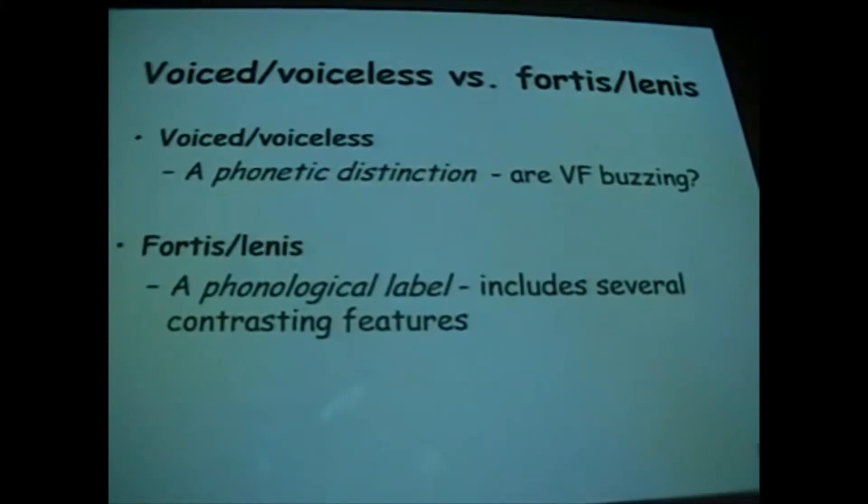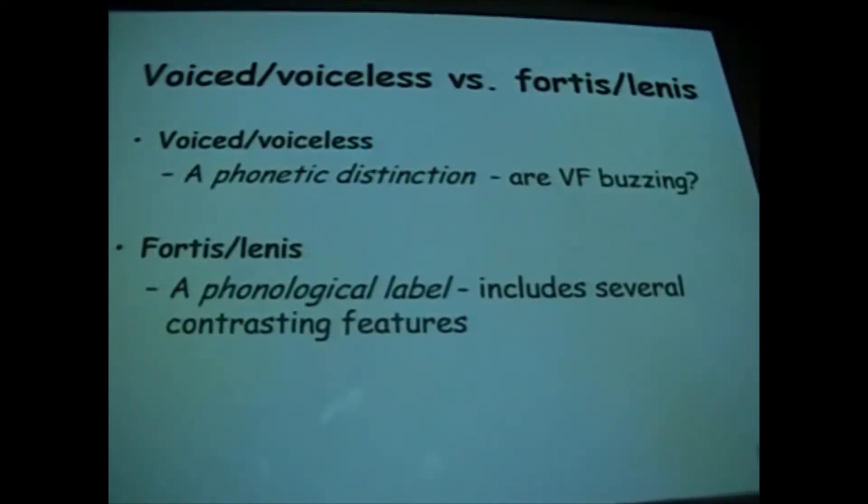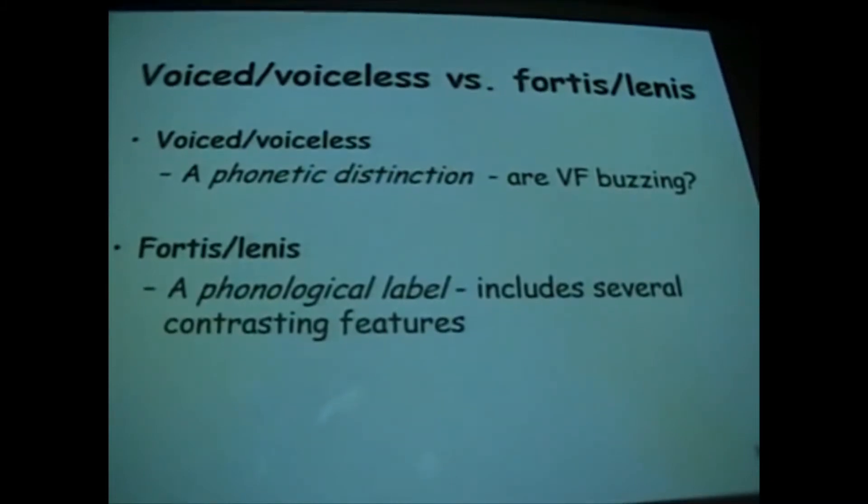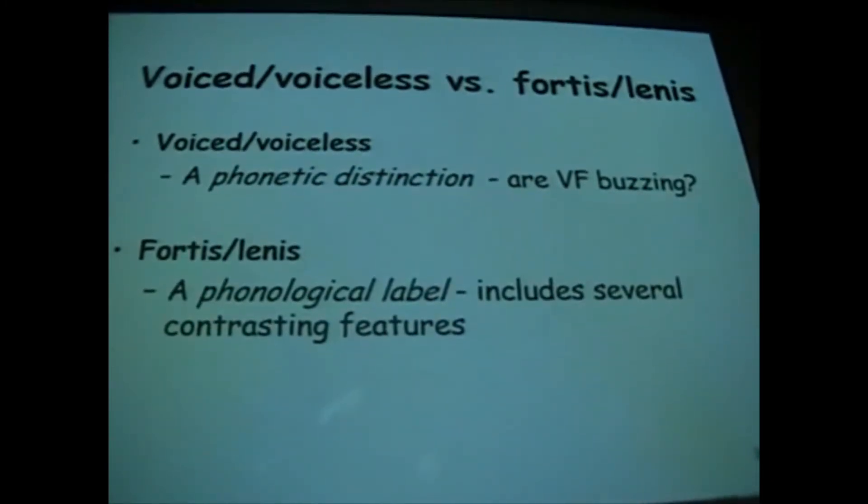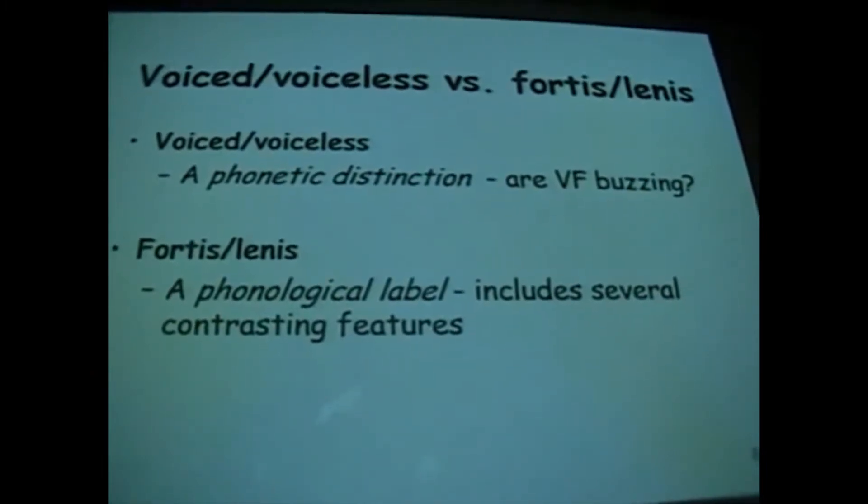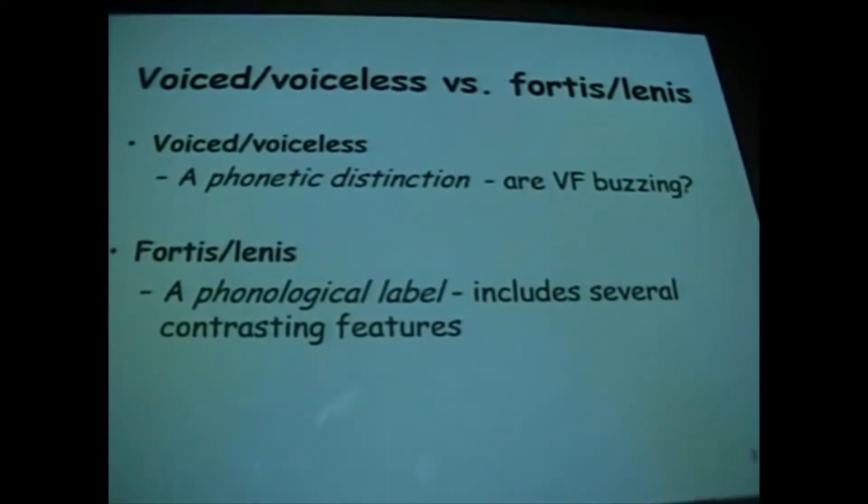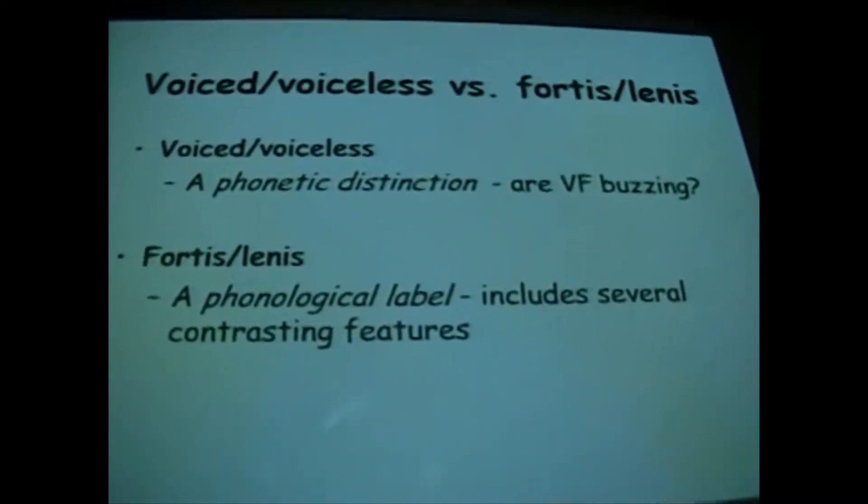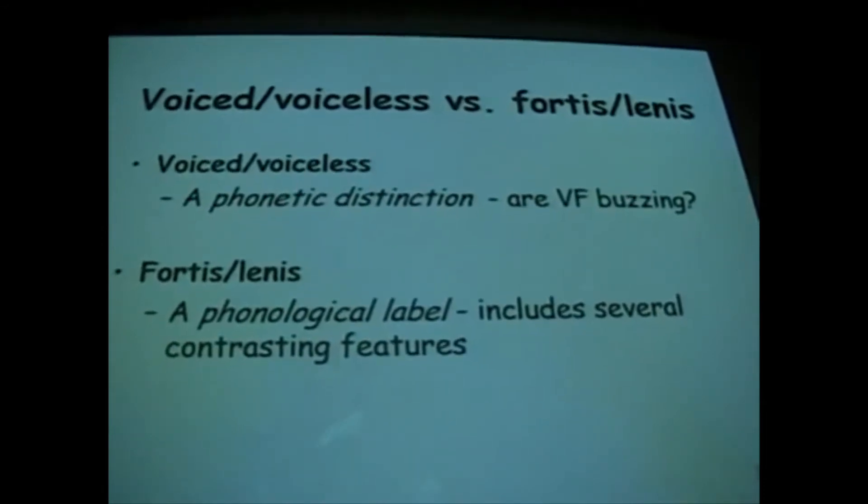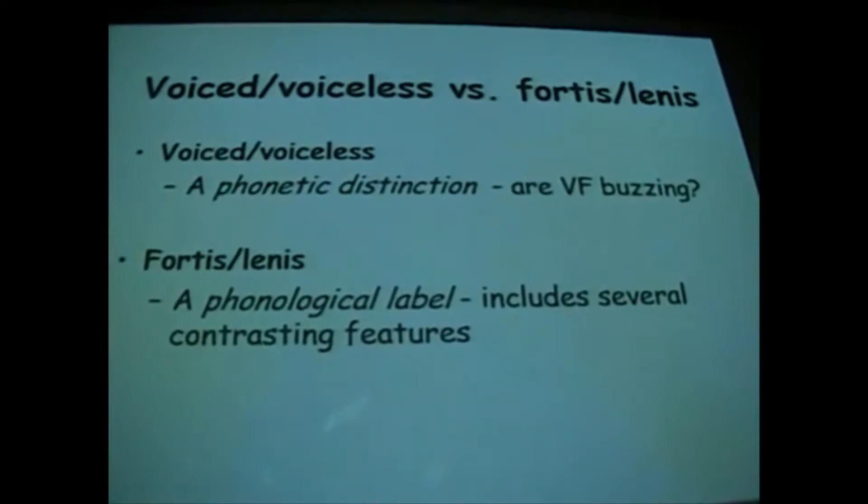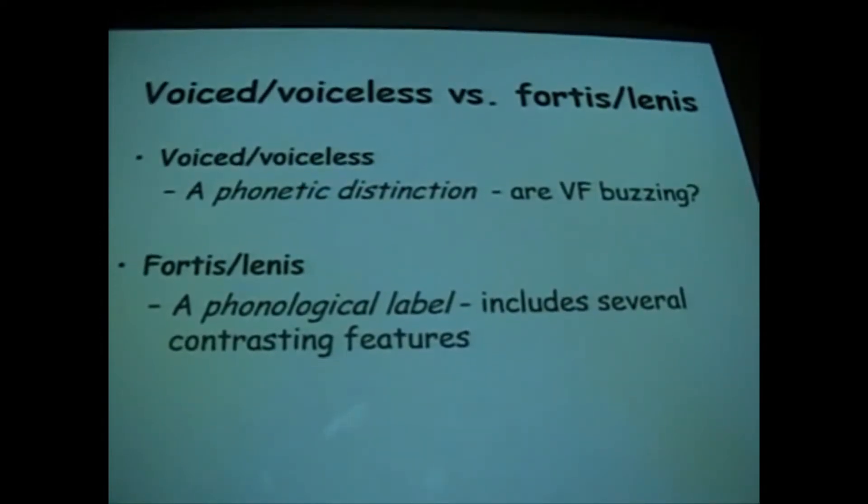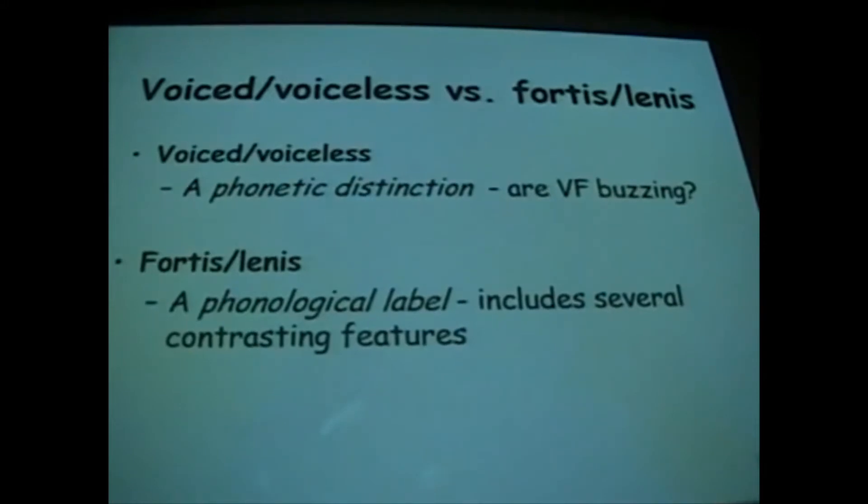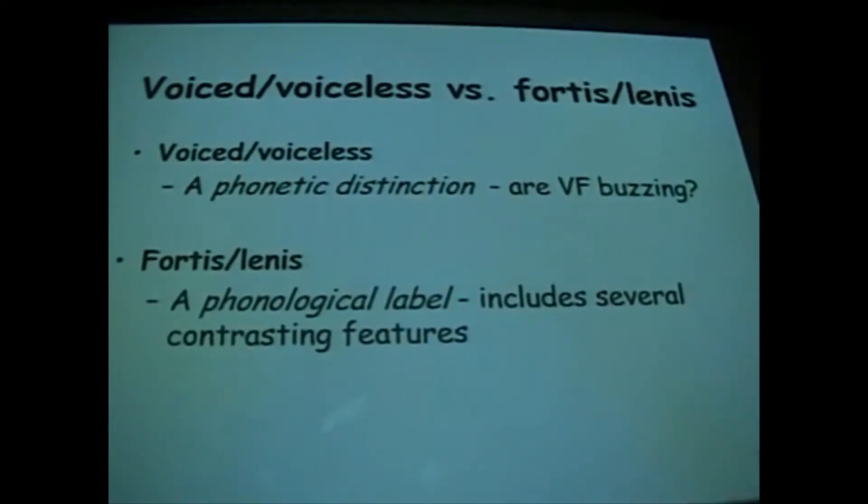Let's take the first one then, voiced and voiceless versus fortis lenis. This is a phonetic distinction. Are the vocal folds buzzing? Voiced and voiceless refers to that. If you say an S, and then say a Z. If you want to hear this very clearly, put your fingers in your ears. So say S, and then Z. And you can hear the buzzing. You all sounded like a set of bumblebees. You can hear the buzzing for the Z there quite easily.